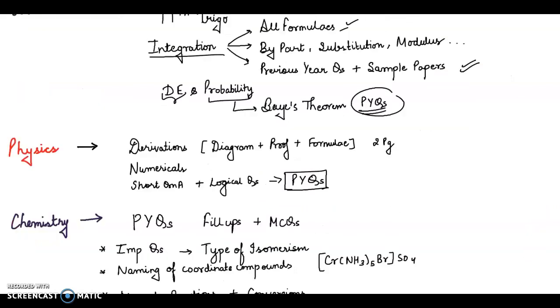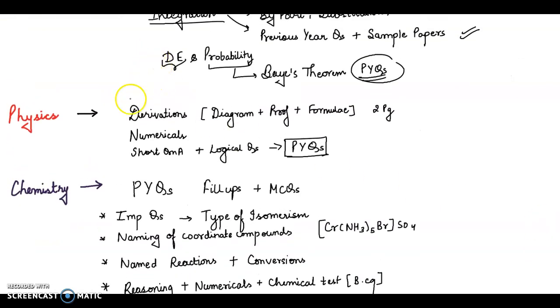And then for physics, derivations are the most important part and you need a lot of practice before writing a derivation. You forget this derivation every time one day before your examination and it happens with everybody, so it's very common. Two page derivation or is necessary. Try to cover it in two pages. The diagram, proof and formula should be validated and correct.